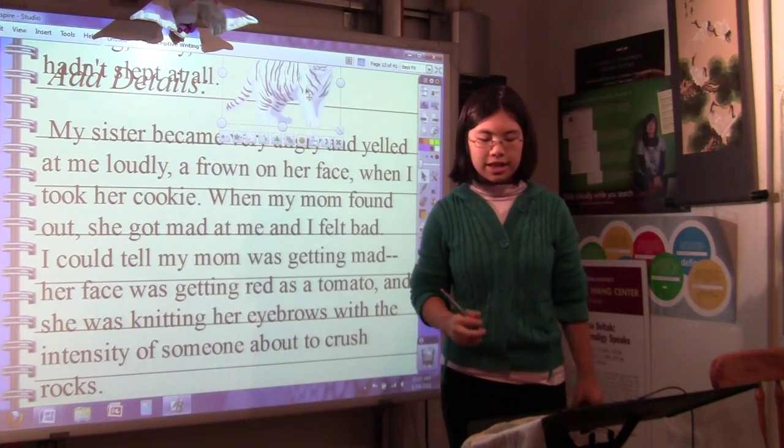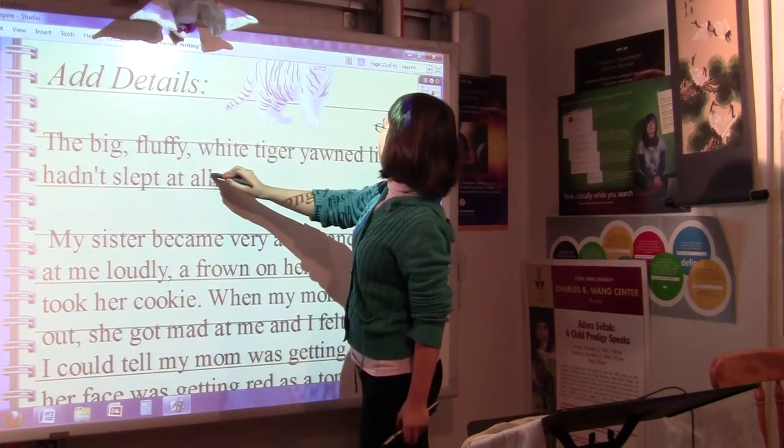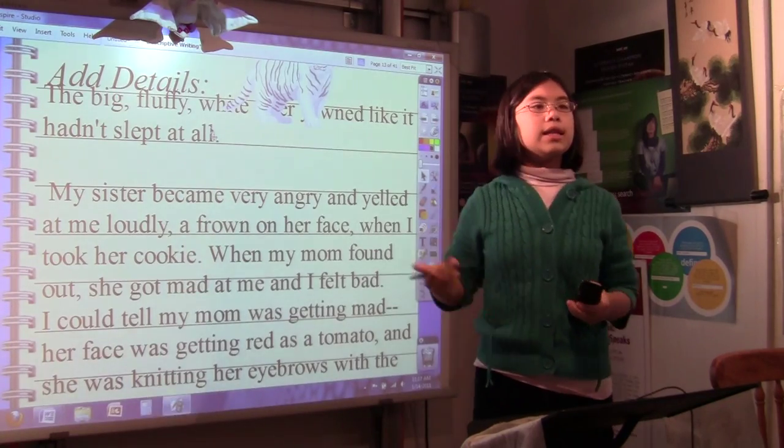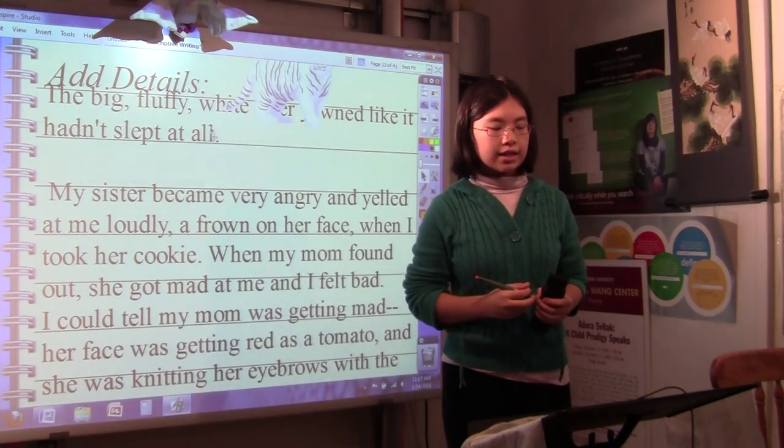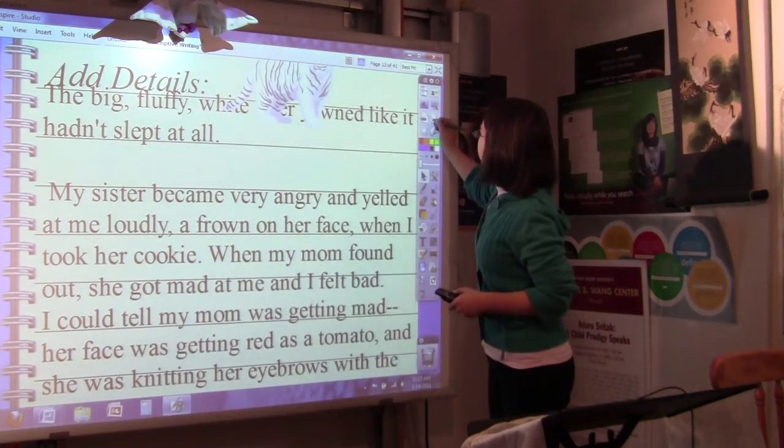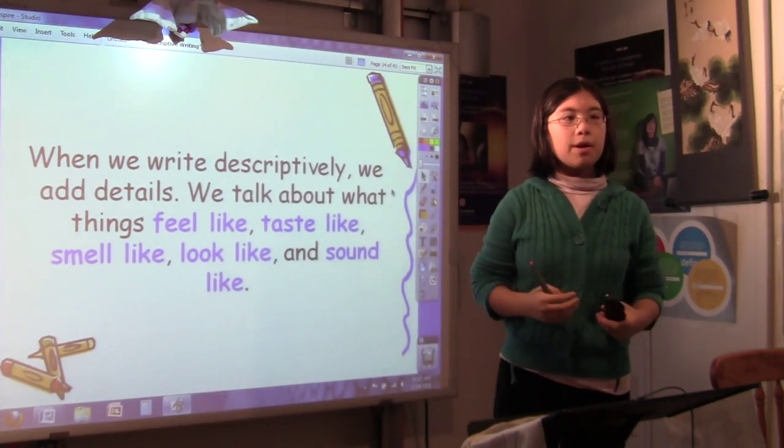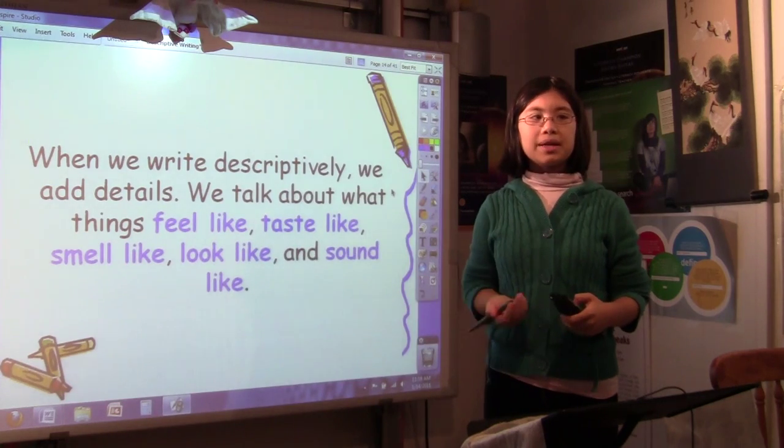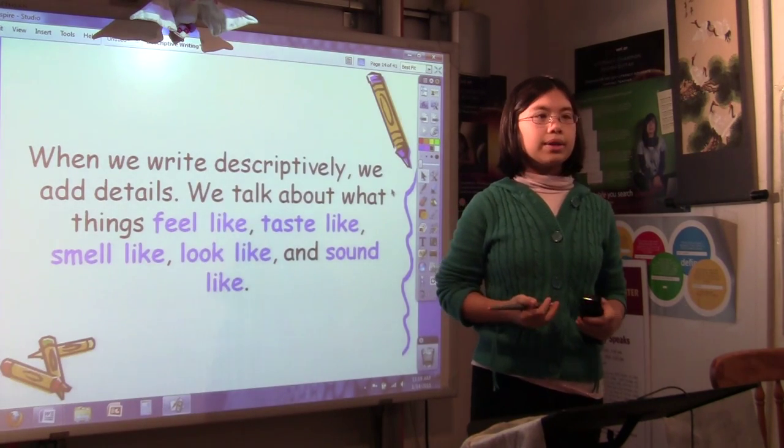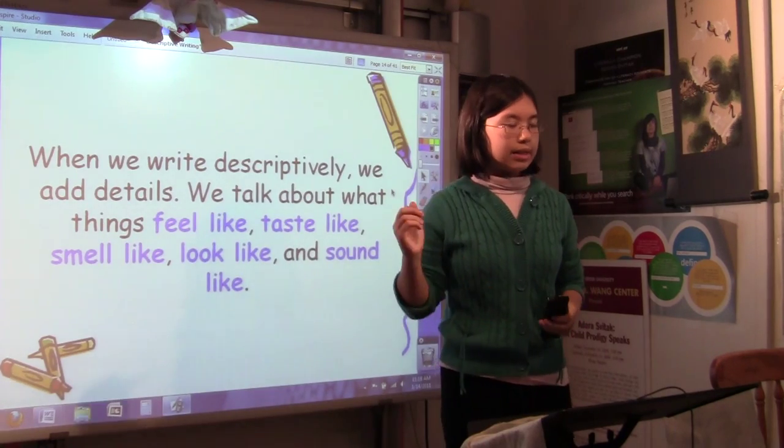And then when we talk here about the tiger, the big fluffy white tiger yawned like it hadn't slept at all. We see the big fluffy white tiger. These descriptive details act kind of like clues for us to be able to visualize the image in our head. When we write descriptively, we add details. We might talk about what things feel like, taste like, smell like, look like, sound like.